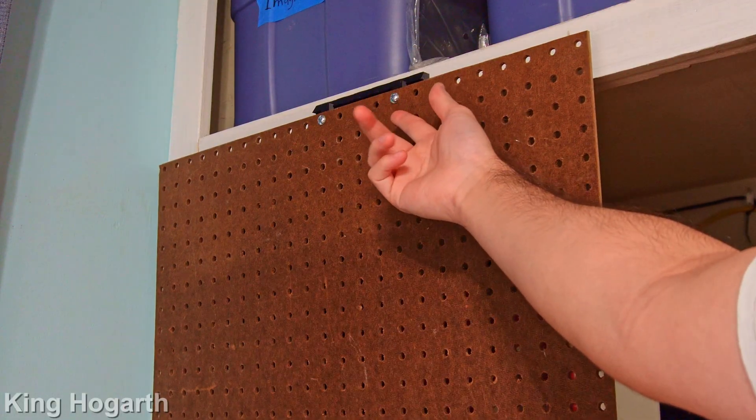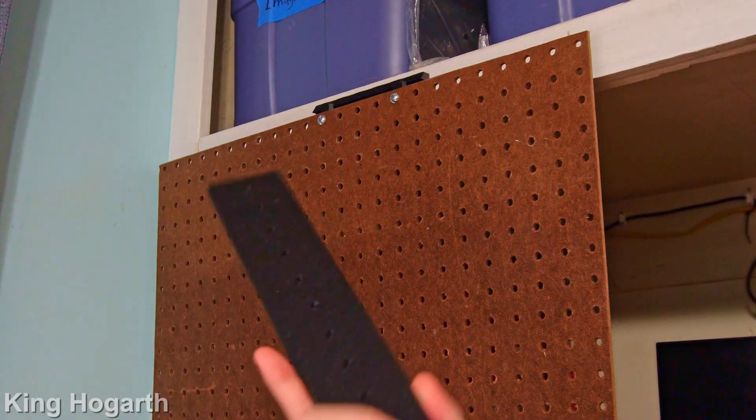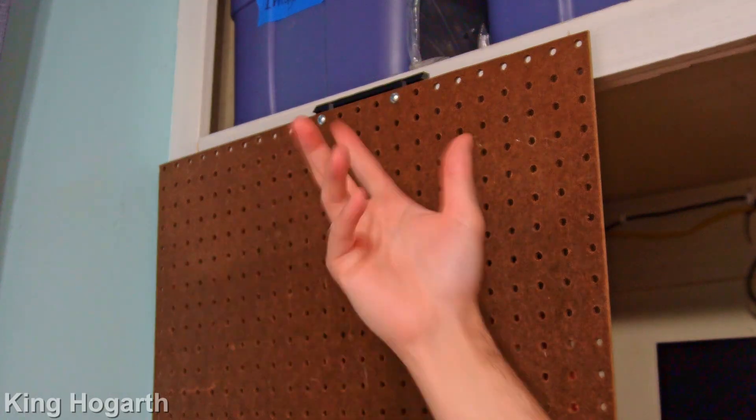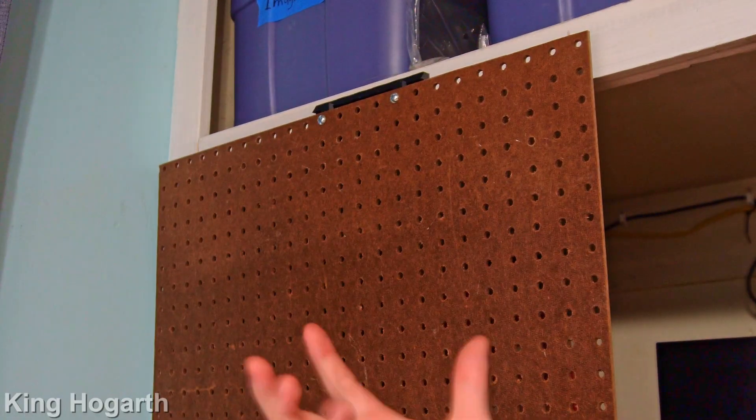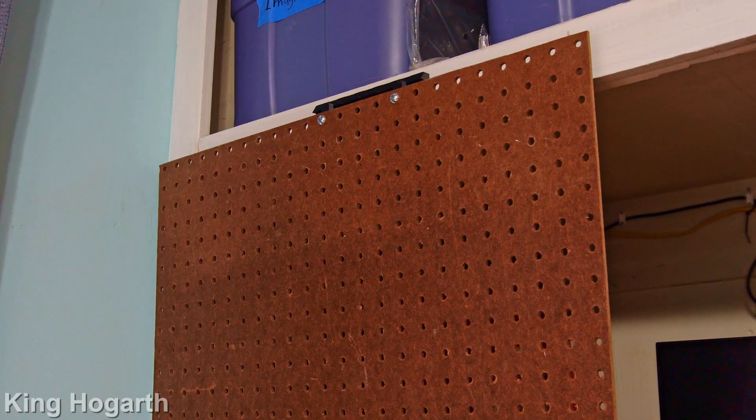And also these have default print settings on the Creality slicer. Like that's it. That's what this is. We could probably increase wall thickness or change the infill settings to be a lot more dense. A lot more stiff. But if it doesn't work with the default settings then we'll adjust it. But you know that's kind of what it is.